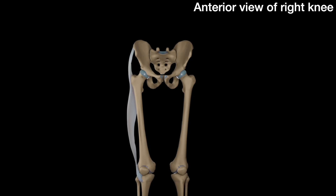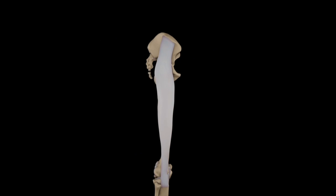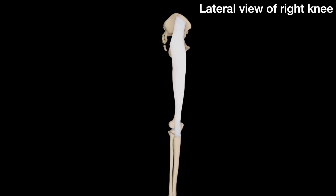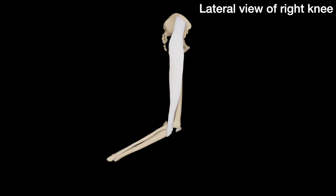Another important structure for the pivot shift test is the IT band, which originates from the iliac crest and inserts at the lateral condyle of the tibia. Due to the position of the IT band relative to the position of the knee joint, the moment force produced by the IT band helps maintain the extended position of the knee. However, when the knee is flexed, the change in the relative position of the IT band causes its moment force to further flex the knee.